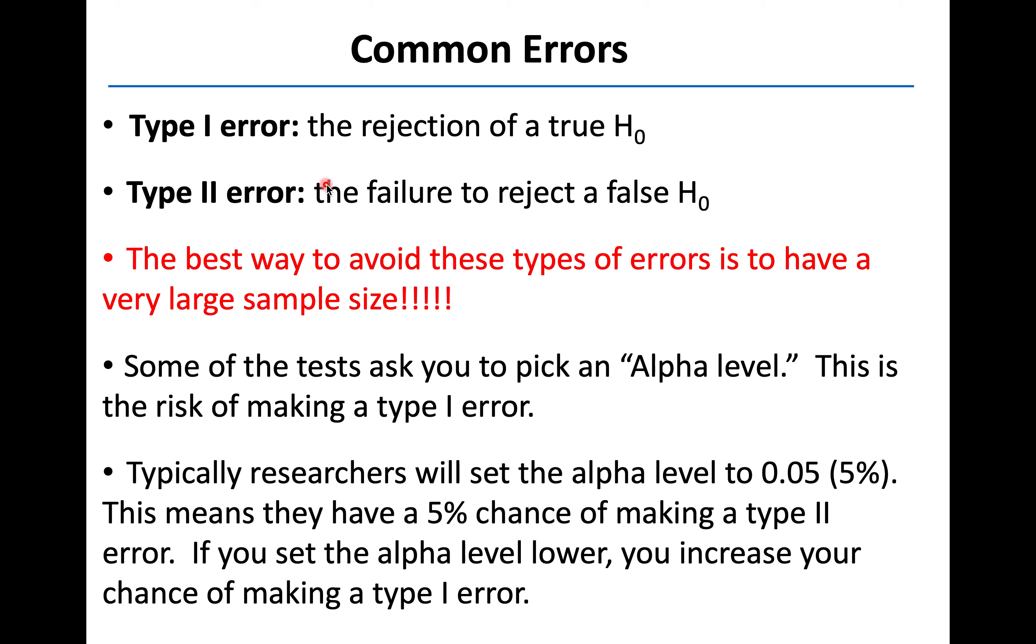So both of those types of errors are bad. How do we avoid them? Well, the best way to avoid either type 1 or type 2 errors is to have a large sample size. So the more samples, the more data points you can have, the less likely it is that you're going to make one of those mistakes.